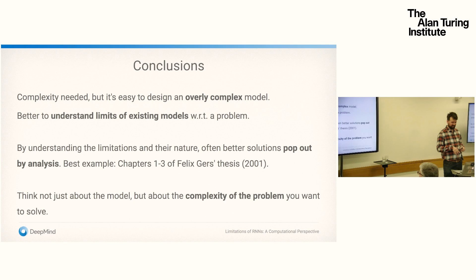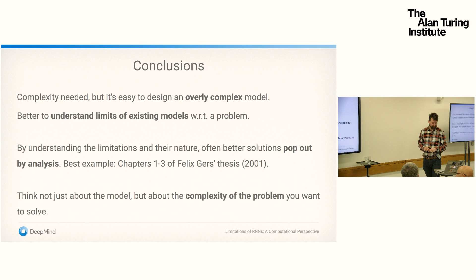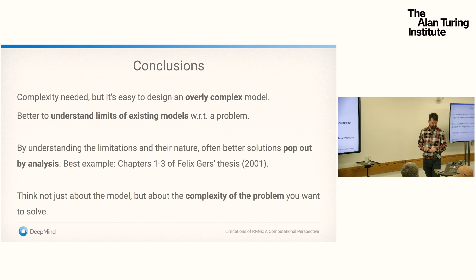For translation, attention seemed to be that minimum unit. For document-level translation, it'll be something else. By understanding the limits and limitations of your architecture and their nature, often you can find a better solution through analysis. The best example of this is chapters one through three of Felix Gers' thesis — it shows the vanishing gradient problem for RNNs, and when you read the way it's written, it becomes obvious that adding gates is the way to solve it. Think not just about the model, but about the complexity of the problem and the limitations of your model with regard to that complexity, in order to guide future research. Thank you.